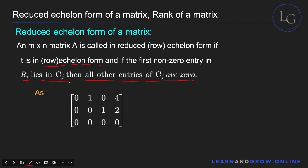Now for the second condition of reduced echelon form: the leading entry in row one is a one, and it is the only nonzero entry in its respective column. Similarly, the leading entry in row two is a one, and it is also the only nonzero entry in its column. So this matrix is indeed in reduced row echelon form.